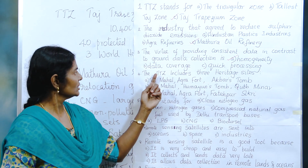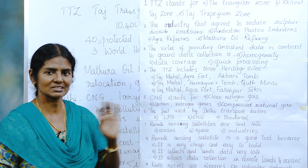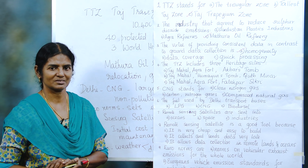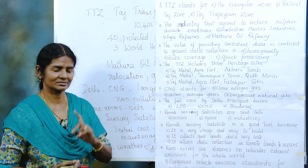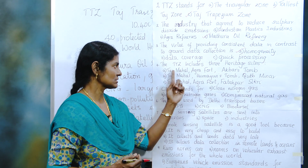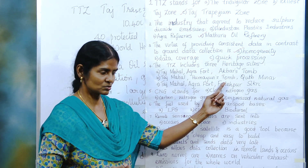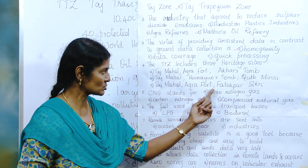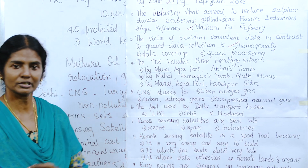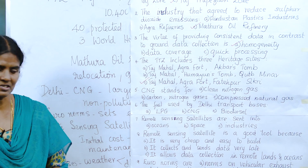The TTZ includes three heritage sites — this we have to remember. What are the three? Is it Taj Mahal, Agra Fort, and Akbar's Tomb? Or Humayun's Tomb and Qutub Minar? Or Agra Fort and Fatehpur Sikri? The third option — Taj Mahal, Agra Fort, and Fatehpur Sikri — is the correct answer.